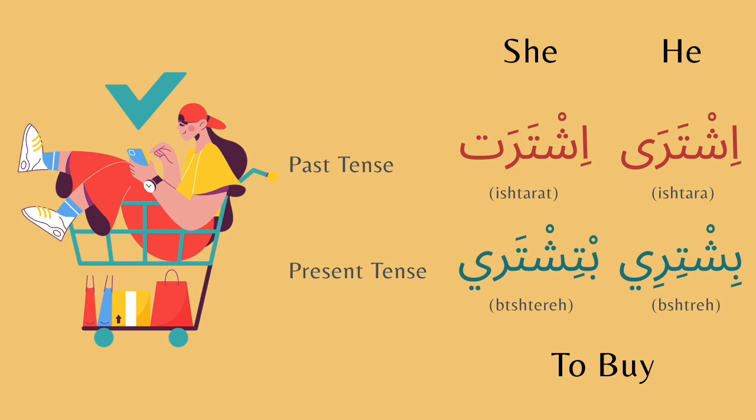Next up we have to buy. For the past tense, for he you would say ishtara. For she you would say ishtarat. For the present tense, for he you would say bishtiri. For she you would say bitishtiri. I'll repeat them again.